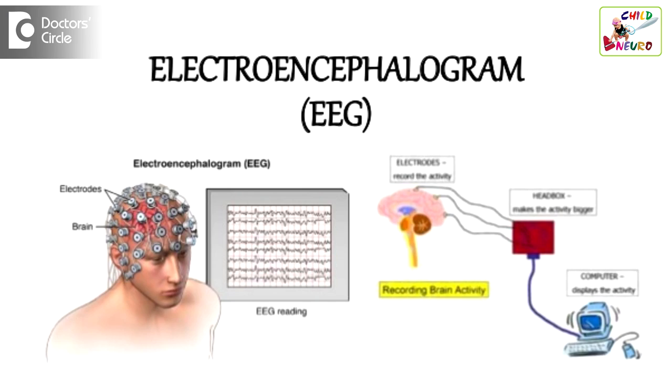EEG — full form electroencephalography — is the most commonly performed test in children who are suffering from epilepsy. This is a test similar to ECG for the heart, but done for the brain, where they will connect various electrodes to the scalp and document the electrical activity from the brain.